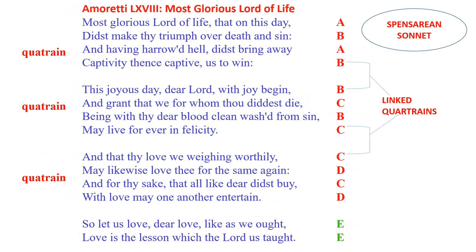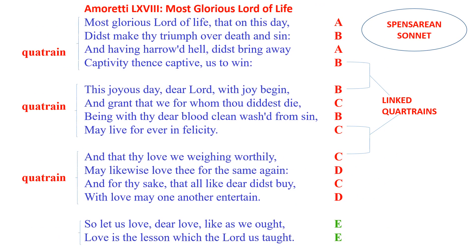An example of a Spenserian sonnet is Spenser's Amoretti 68, 'Most Glorious Lord of Life.' Like the Shakespearean sonnet, it is divided into three quatrains and a couplet, with the rhyme scheme ABAB BCBC CDCD EE.